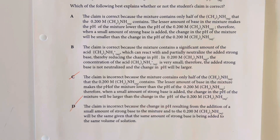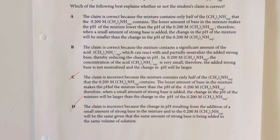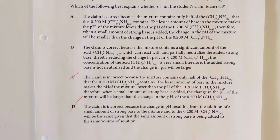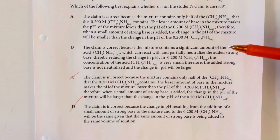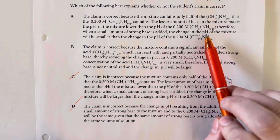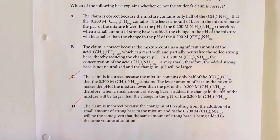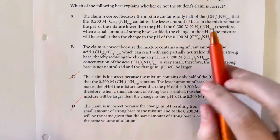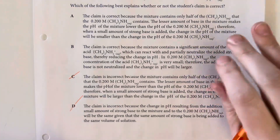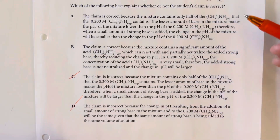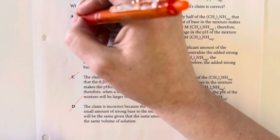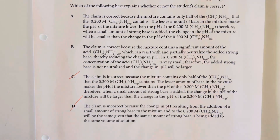Option A states the claim is correct because the mixture contains only half the dimethylamine that the 0.2 molar dimethylamine solution contains. The lesser amount of base makes the pH of the mixture lower, so when a small amount of strong base is added, the pH change will be smaller. This is not a good answer — it has nothing to do with the conjugate acid being present within the solution and therefore being able to return to the weak base form easily if a stronger base were added.